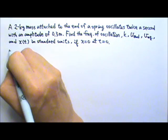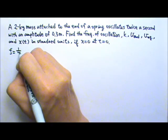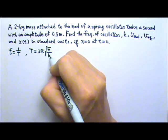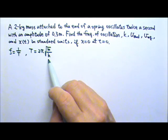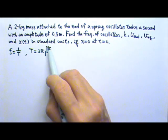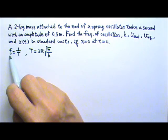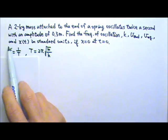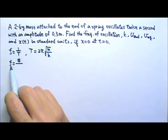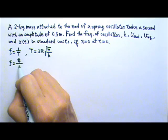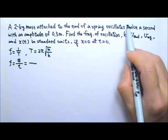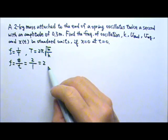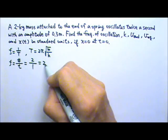To find the frequency, we know that the frequency is 1 over the period, and the period equation is 2π times the square root of m over k. We have mass but not the spring constant, so we can't use that equation directly. But we know the mass oscillates twice a second, so by the definition of frequency — number of events per unit time — we have two events in one second, so the frequency is 2 hertz.